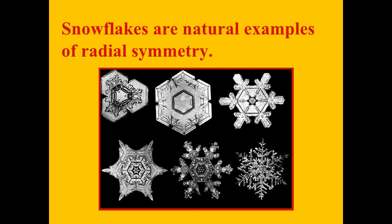Snowflakes are a natural example of radial symmetry. A snowflake always has six sides, and the radial symmetry we'll be working on today will be six-sided radial symmetry as well.